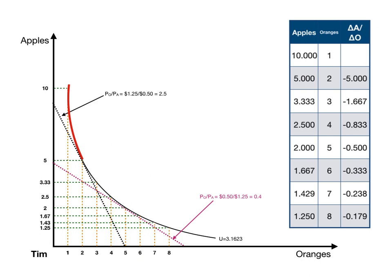Let's look at the indifference curve above the equilibrium for the budget constraint that's minus two and a half, where apples are 50 cents and oranges are $1.25. Tim is willing to give up more apples for an additional orange than what the market requires. The slope of that indifference curve is minus two and a half, the same as the slope of the budget constraint — for every orange Tim wants, he has to give up two and a half apples. Above the point of five apples and two oranges, the indifference curve says Tim is willing to give up more than two and a half. When he has ten apples and one orange, he's willing to give up five apples for an additional orange, but he only has to give up two and a half in the market.